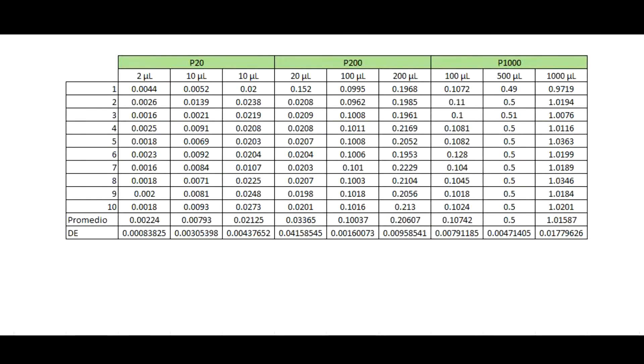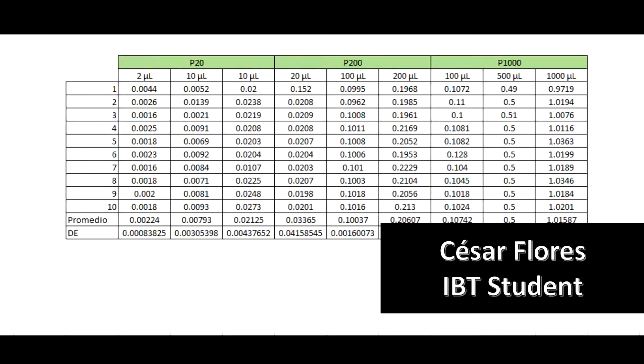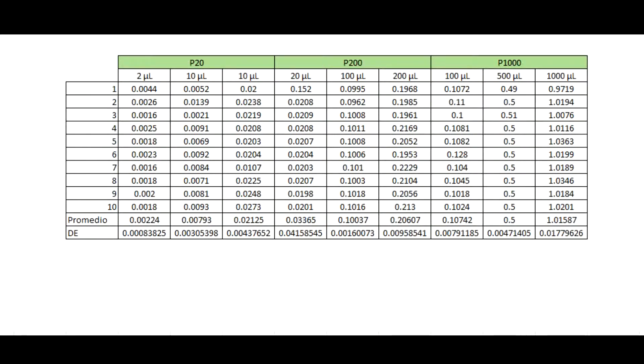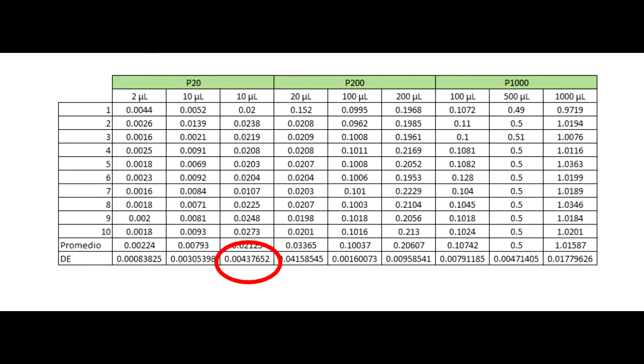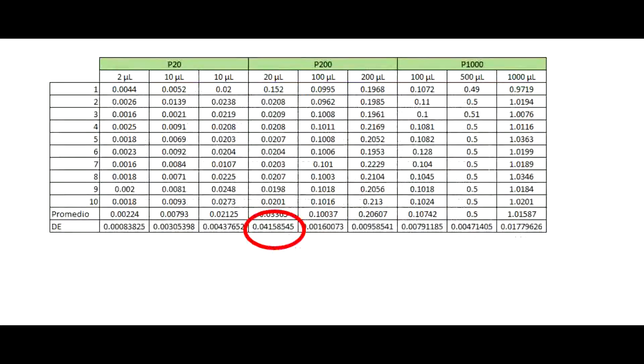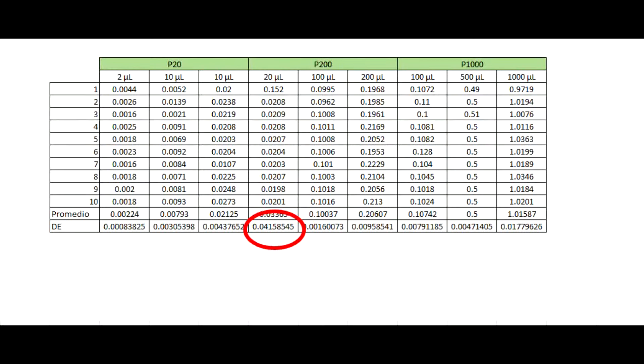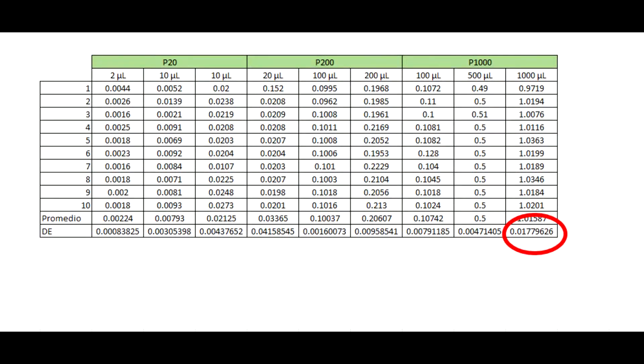According to the obtained data, we can select the largest standard deviation value of each micropipet that we used. In the 20 microliters micropipet it is the maximum limit, in the 200 microliters micropipet it is the minimum limit, and finally, in the 1000 microliters micropipet it is the maximum limit.